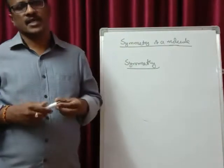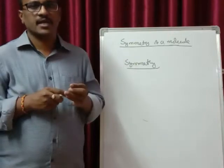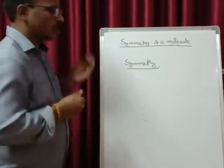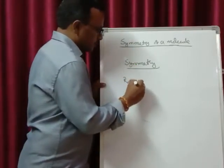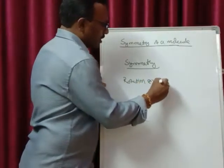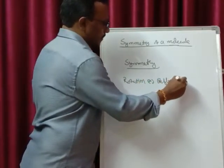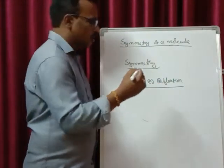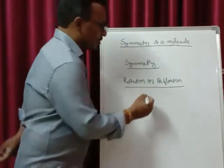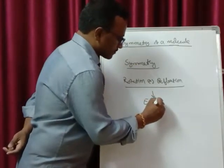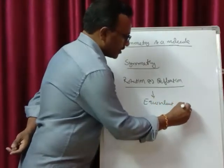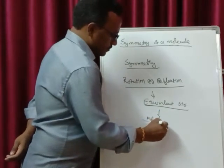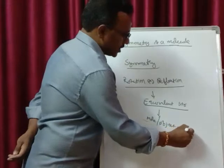What is symmetry? Any object — in general I am talking about any object — which on rotation through an axis or reflection through a plane gives you an equivalent structure, then we say that molecule or object possesses symmetry.